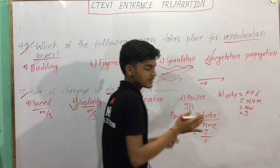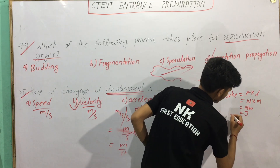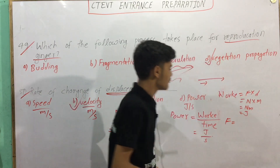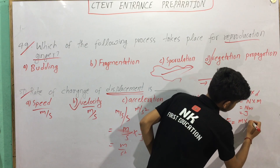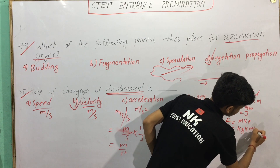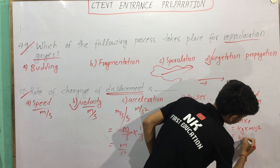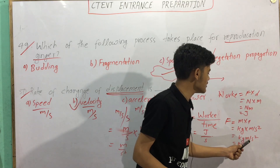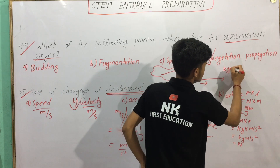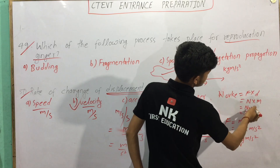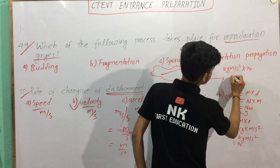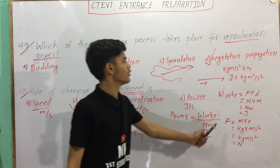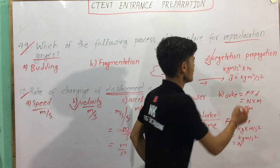Joule is called meter per second. What is newton? The force is called newton. Force equals mass into acceleration, then the mass is called meter per second squared — Newton. So Newton is kg·m per second squared, which is also called joule.